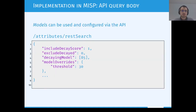Through the MISP API, this is how you configure and ask the decay model to be applied on your data. You pass include_decay_score set to 1 to ask the system to include the decay information. You can also pass exclude_decay_flag, meaning if this flag is set it will filter out all attributes and IOCs that have been marked as decayed by the different models. You can also provide which model should be applied to your search, and optionally change the model configuration on the fly.